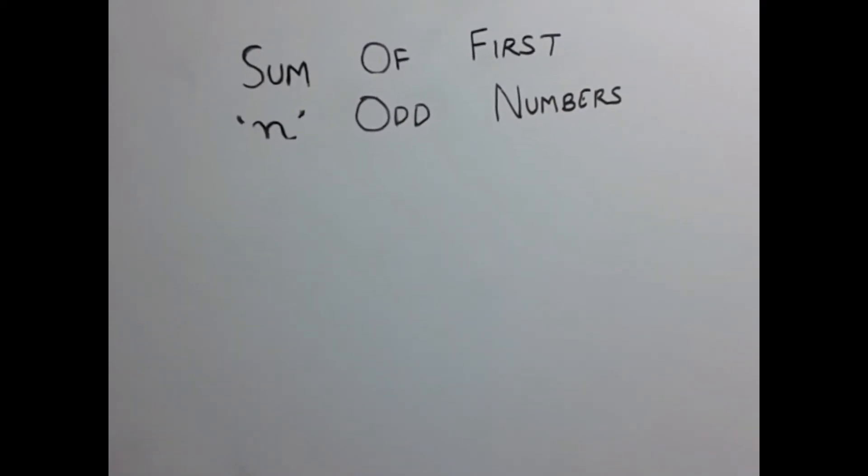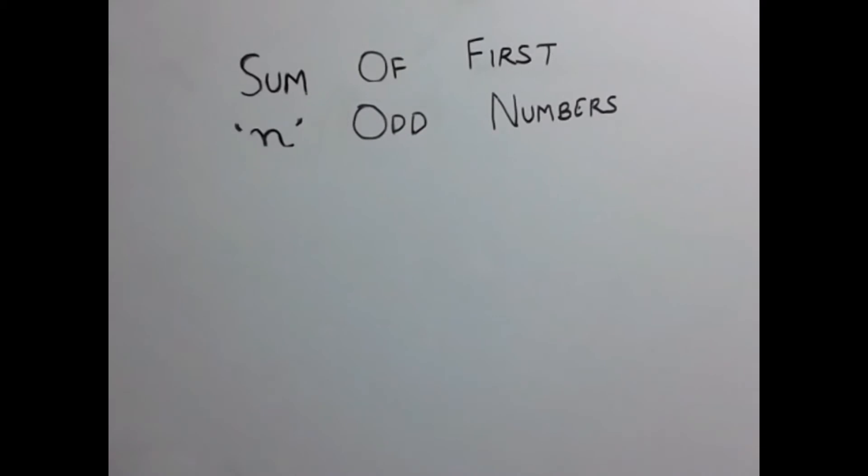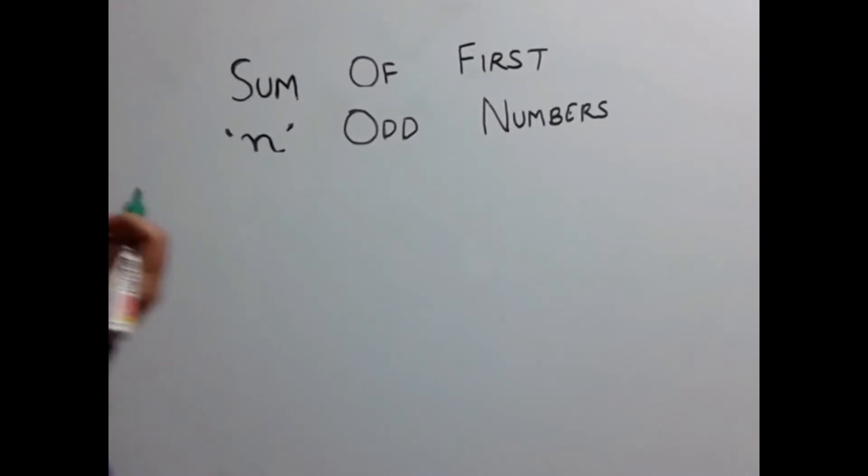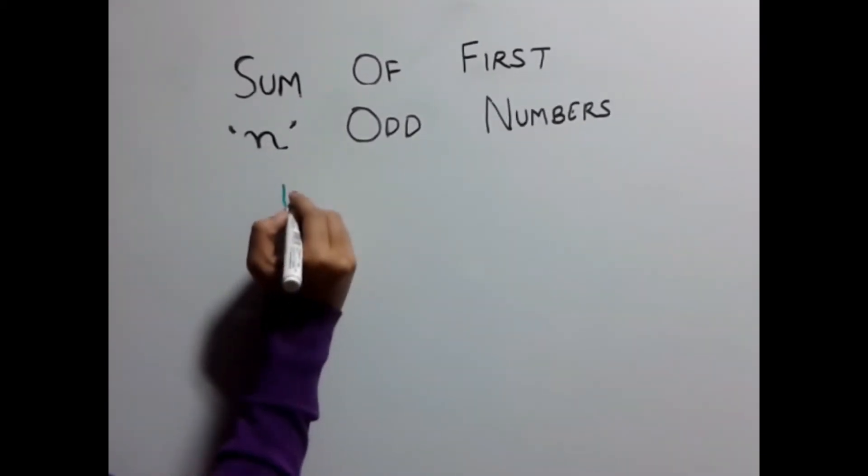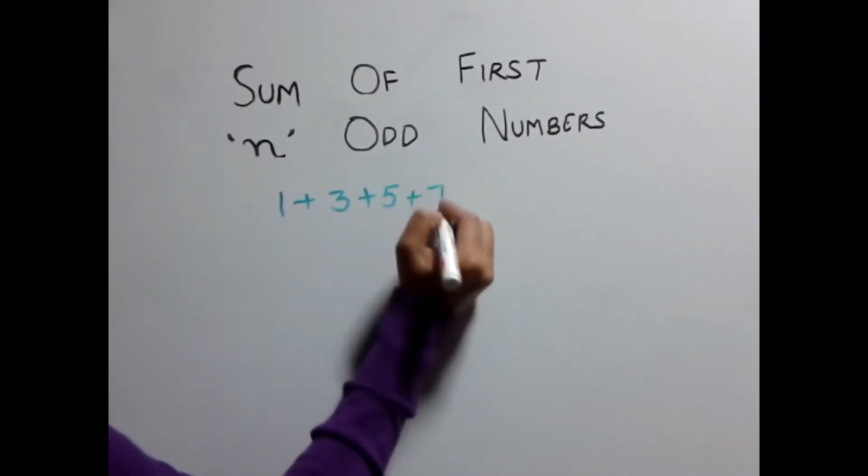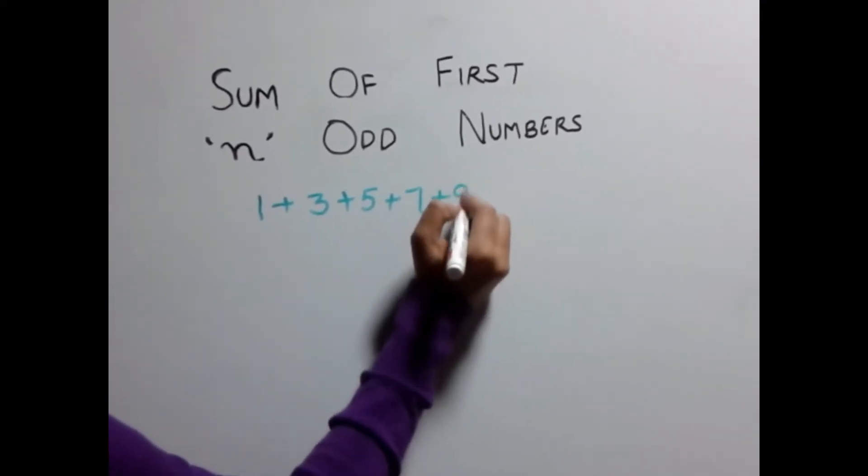In this class we will be discussing the sum of first n odd numbers. Let's find out the sum of first 5 odd numbers. First 5 odd numbers are 1, 3, 5, 7 and 9.